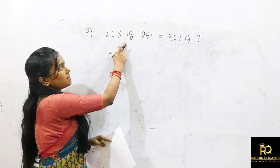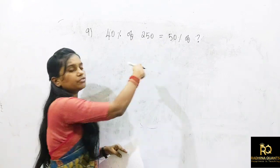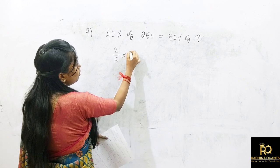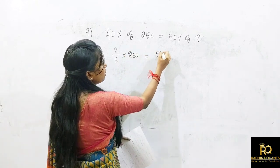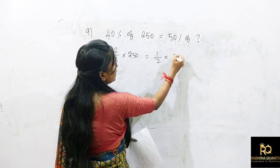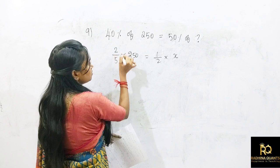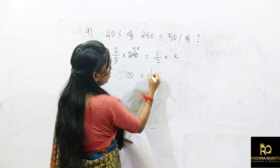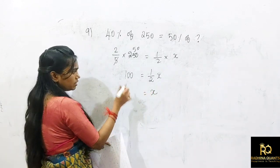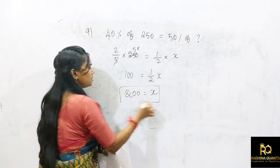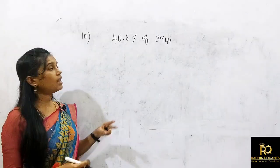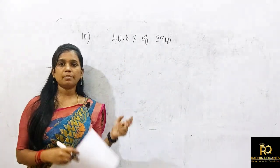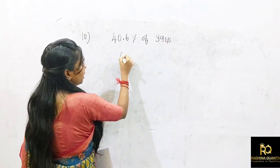Next question: 40% of 250 equals 50% of x. We calculate: 40% is 2/5. So 2/5 × 250 = 100. And 1/2 × x = 100, so x equals 200.